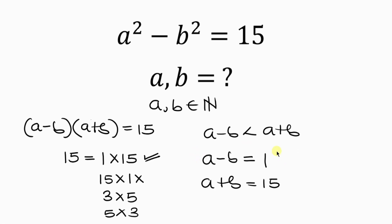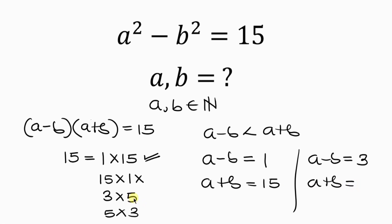This gives us our first case: A minus B equals 1 and A plus B equals 15. The second case is A minus B equals 3 and A plus B equals 5. Let's solve these cases one after the other.